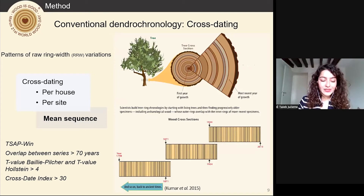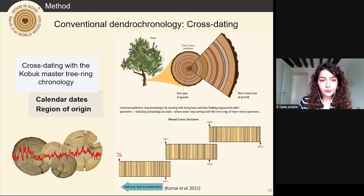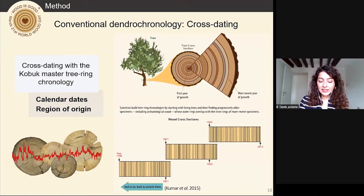Raw ring-width series were created for each house and then each site, allowing us to identify architectural wood disks with similar ring-width patterns and to synchronize them into a mean floating sequence. We determined positive cross-dating based on statistical indices and visual comparisons commonly used in dendrochronology. We used the software t-subprogram and the CDI cross-date index as the main statistical index. Statistical thresholds were set in agreement with the literature and tests performed with the individual series of the existing Kobuk chronology. These floating sequences and individual series were then cross-dated with the Kobuk River master tree-ring chronology — the only existing sequence in Alaska long enough to enable cross-dating of archaeological wood from northwest Alaska — allowing eventually to date them and determine if the disks came from northwestern Alaska.